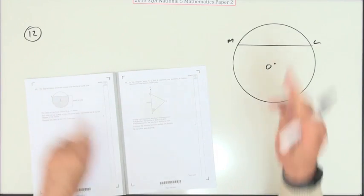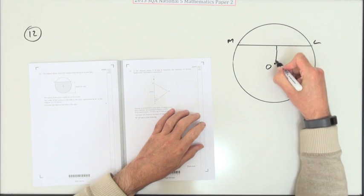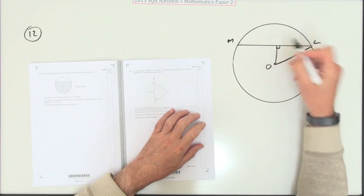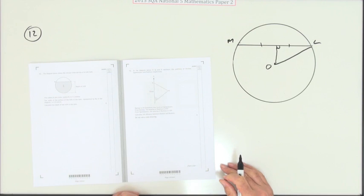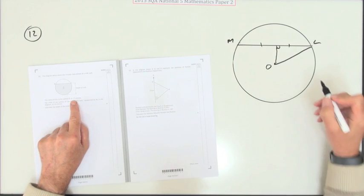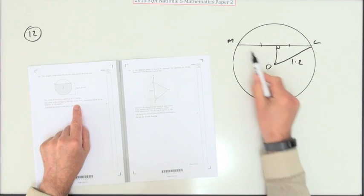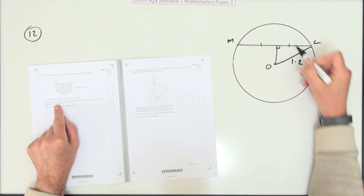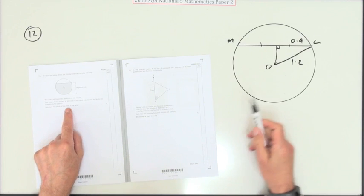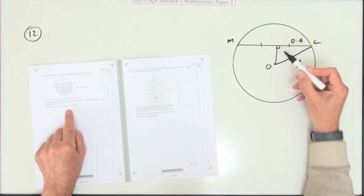Number 12. There you go - chord in the circle, right angle triangle. First thing you do, not even reading the question, I'm going to join the center to the outside and the center to the middle of the chord. There's my right angle triangle. Now I'll read it. The radius is 1.2, center to the outside. The width of the surface - that's this chord - is 1.8, so that's half of it, that's 0.9. It wants the depth of the milk, that's the distance all the way down.